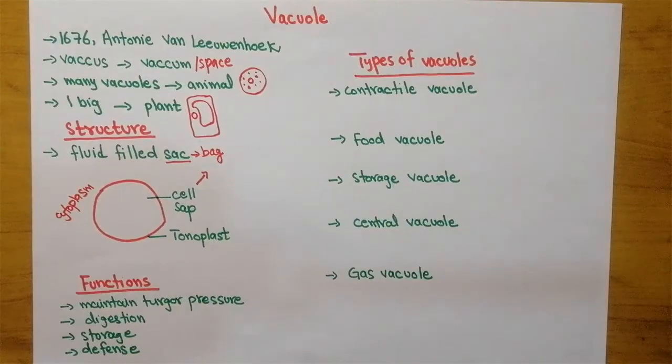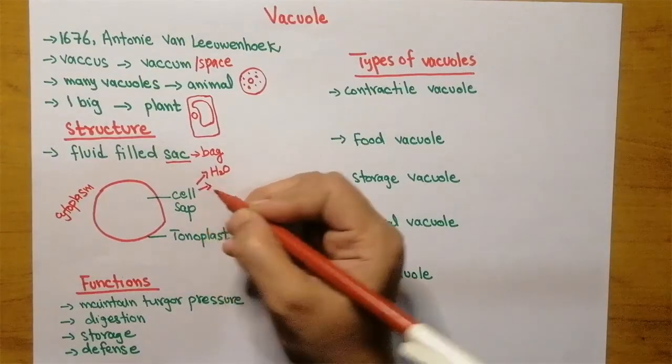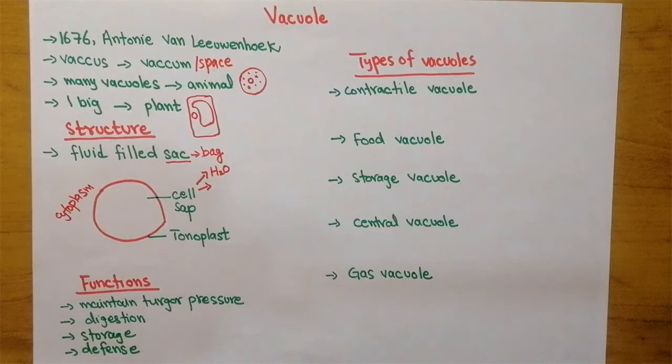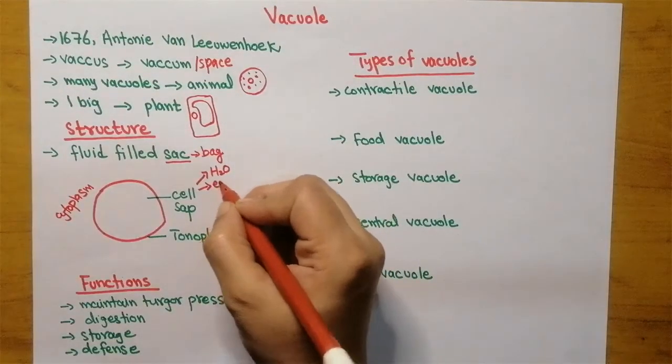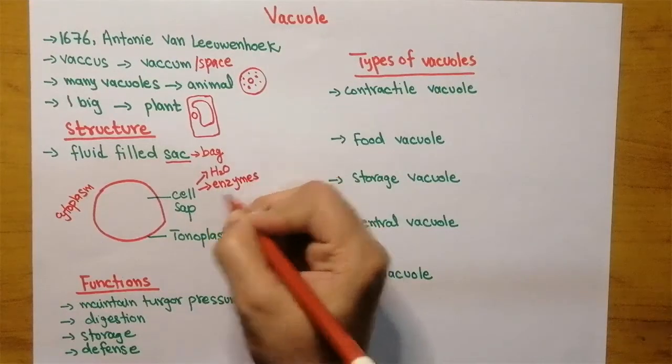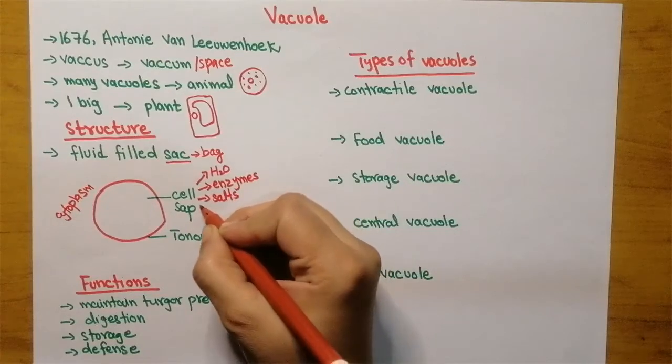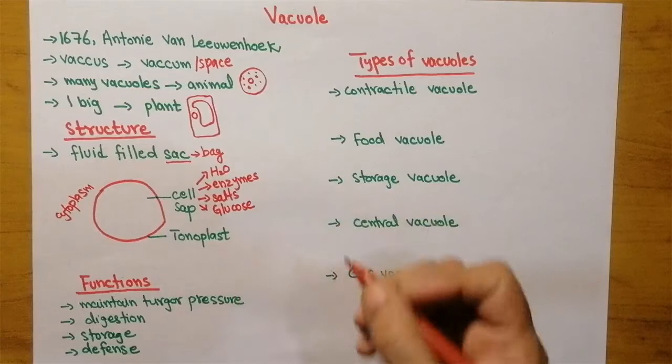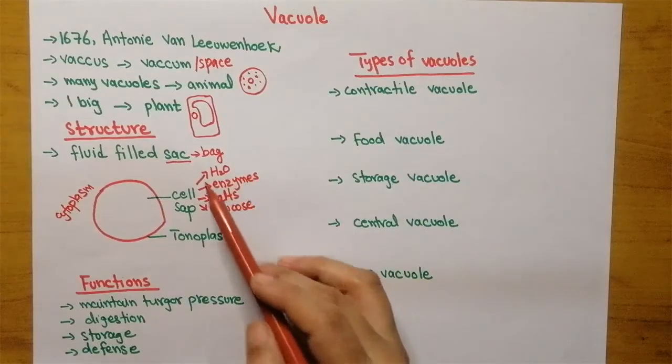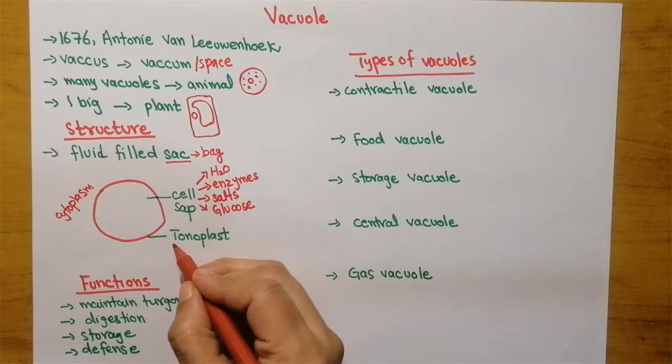If we talk about the composition of cell sap, the cell sap is actually made up of water, it contains enzymes, salts, and also contains glucose. All these things are present in the cell sap.